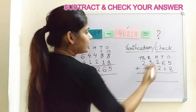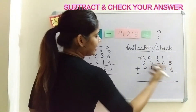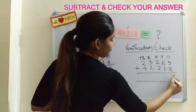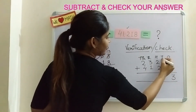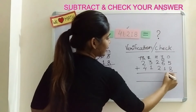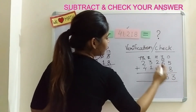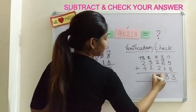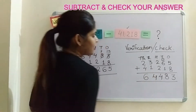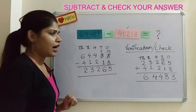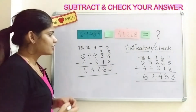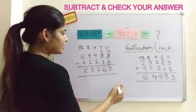Now let us perform the addition: 5 plus 8 is 13, carry 1; 6 plus 1 is 7, plus 1 carry is 8; 2 plus 2 is 4; 3 plus 1 is 4; and 2 plus 4 is 6. Now how do we check that we have done it correctly?